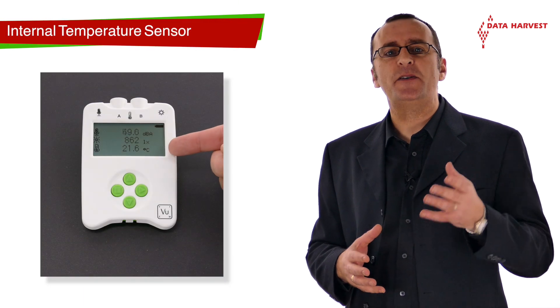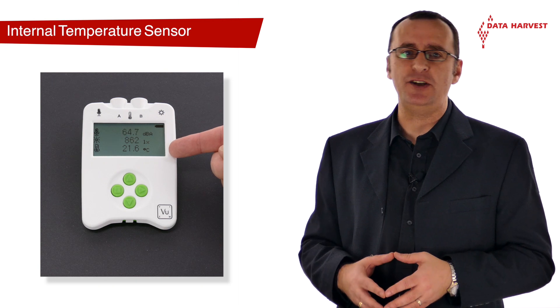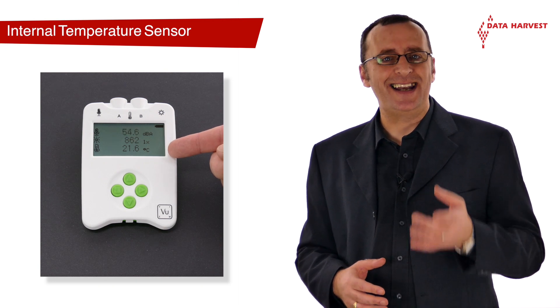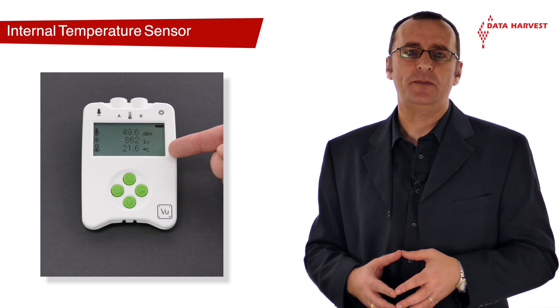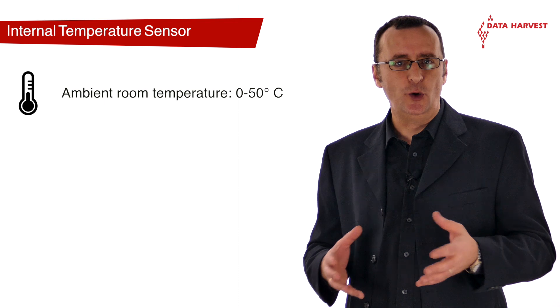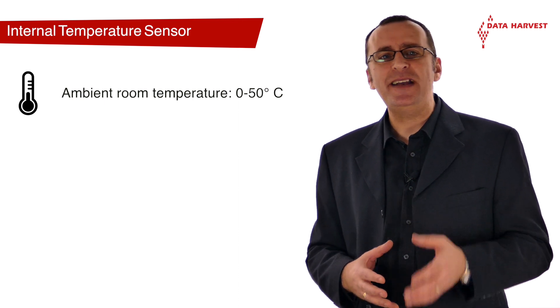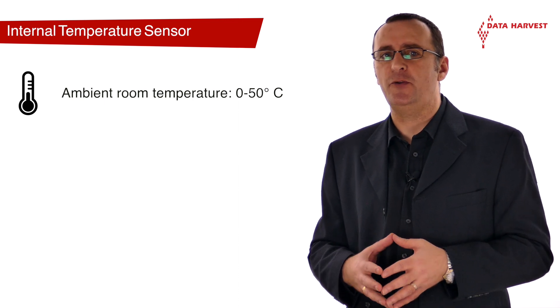The temperature sensor has both Celsius and Fahrenheit ranges. Whichever range is selected applies to both the internal and any plug-in temperature sensors. The narrowest range, 0 to 50 degrees C, is best used for recording ambient room temperature.